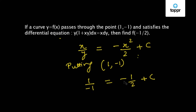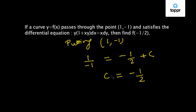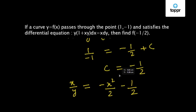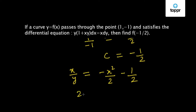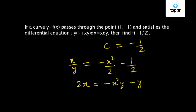So when we solve this, we get c = -1 + 1/2 = -1/2. So finally we have x/y = -x²/2 - 1/2. Simplifying, we get 2x = -x²y - y, and on further simplification we get y = -2x / (1 + x²).